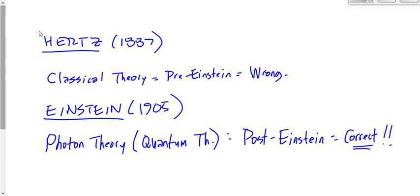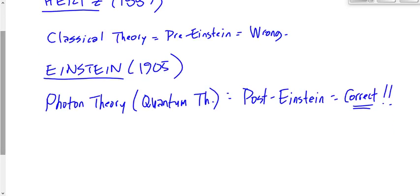Photon theory basically says that light, or EMR in general, is a particle, and that particle has an energy equal to H times F. It acknowledges that energy is not related to the amount of light we have. We got brighter light — so what? We got light shining on something for a longer period of time — so what? We don't get our energy from brighter light or light shining for a longer period of time. We get our energy from the frequency, or the type of light.